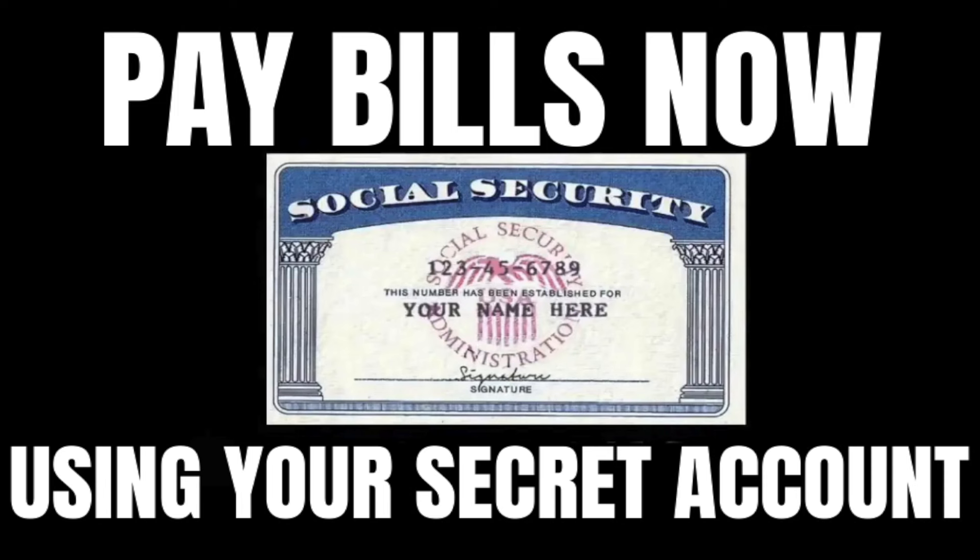Now, in order to determine which Federal Reserve Bank is holding your secret account, you're going to look at the number on the back of your social security card — not the one on the front, the number on the back — and you're going to see a letter. That first letter you see is the only thing you want, and that is going to tell you which Federal Reserve District your account falls in.